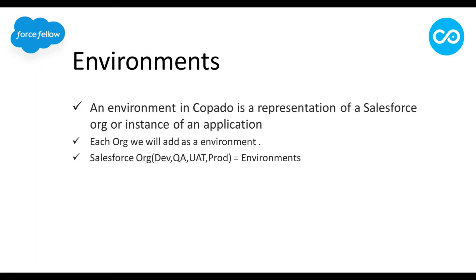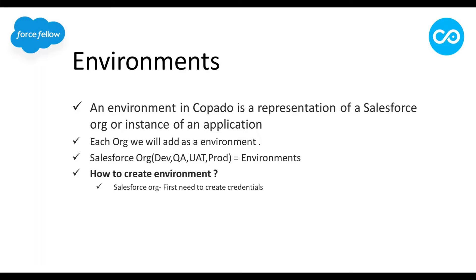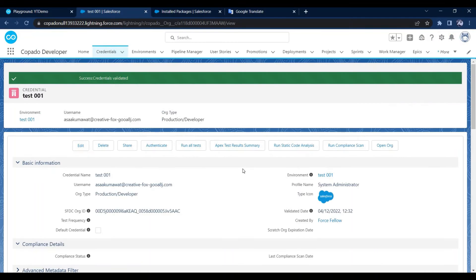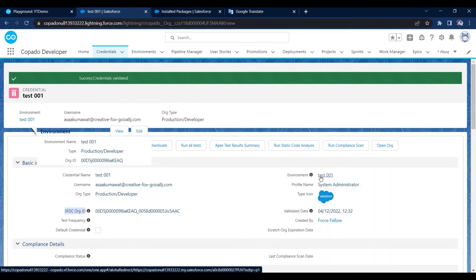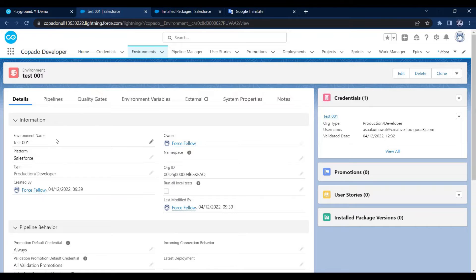If we have four Salesforce orgs in our application, we need to create four environments. For a Salesforce pipeline, we create and authenticate credentials, and then Copado will automatically create a new environment — it retrieves the Salesforce org ID and org name from the credentials and creates the environment record automatically. Let me show you: here you can see the org ID and the environment, and clicking on Test001 shows that Copado directly added a new environment for that credential.